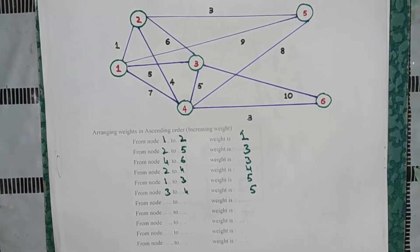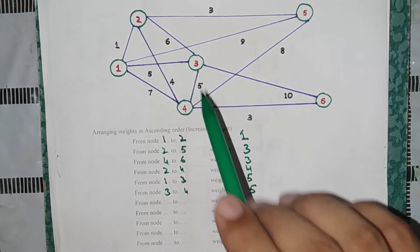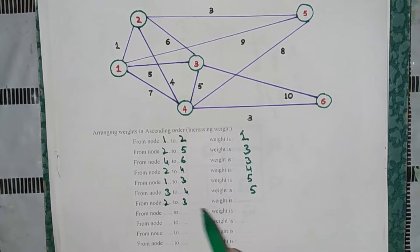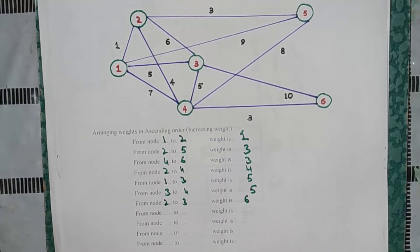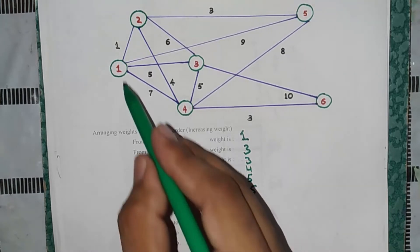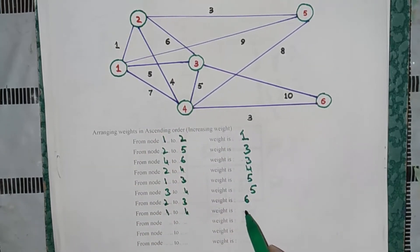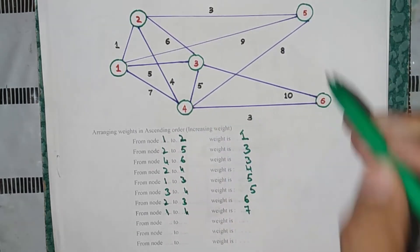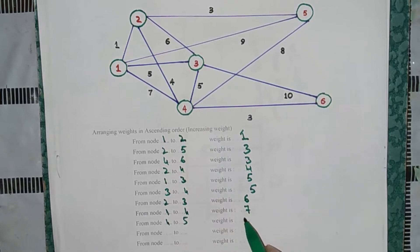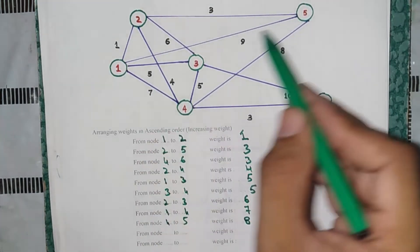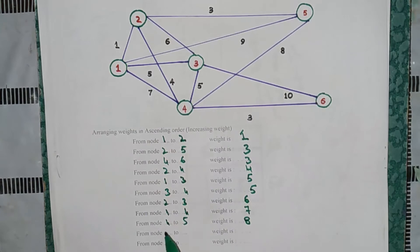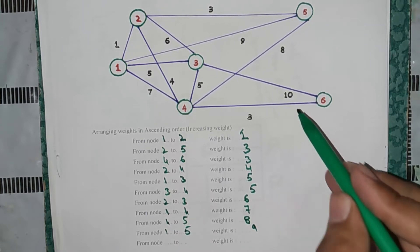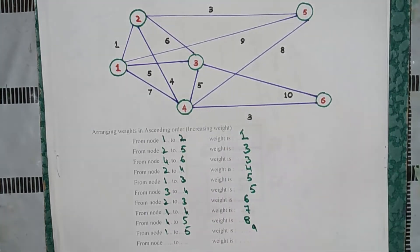After 5, the next larger weight is 6, and 6 appears at only one position: 2 to 3. So we write 2 to 3 with weight 6. After 6, we have 7, which is 1 to 4. After 7, we have 8, which is 4 to 5. After that is 9, which is 1 to 5. And last is 10, which is 3 to 6.